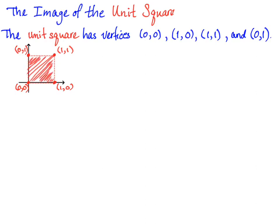We're going to look at a vertical shear — what the image of this square looks like under a particular vertical shear. This vertical shear takes (x, y) to the vector (x, y + 3x). The second component is shifted by an amount proportional to x, so depending on what the horizontal component was, that tells us how much to shift the vertical component.